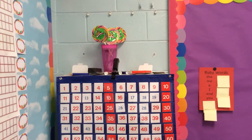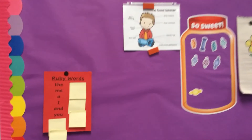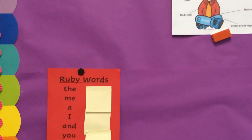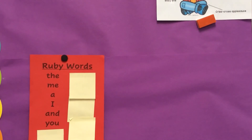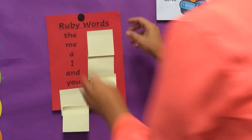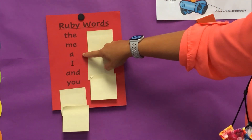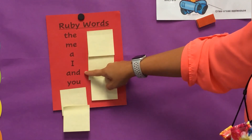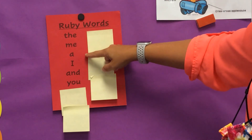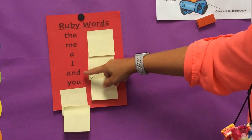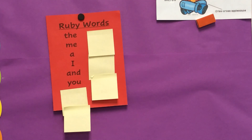Let's look at our sight words. Repeat after me: the, me, a, I, and you. The, me, a, I, and you. Alright, have a great day!